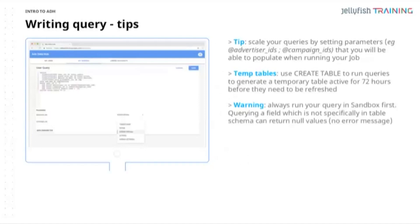A few query tips when writing. One: you can scale queries by setting parameters — really useful especially in sandbox mode, where you can use sandbox activity IDs or campaign IDs, then change them when you run against your own data. Two: always use temporary tables — this helps you manipulate data within ADH without querying the underlying data repeatedly; query it once and keep querying that temporary table. Three: always run your query in sandbox mode first to confirm it's resulting correctly. Also consider staggering date ranges when multiple people are querying ADH to avoid privacy restrictions.